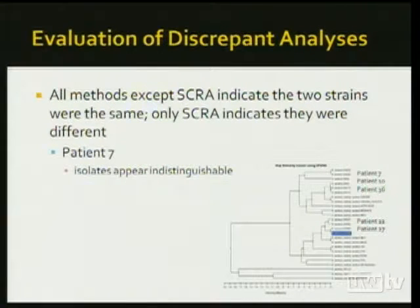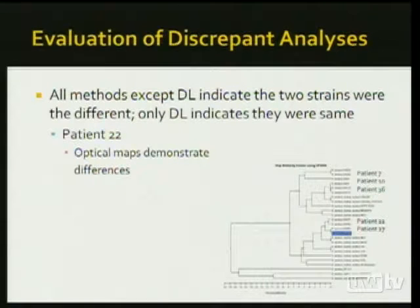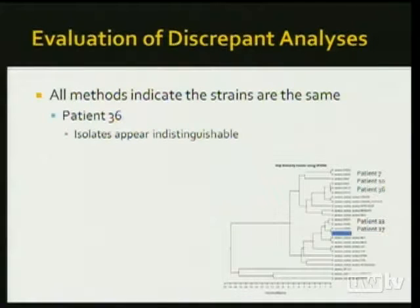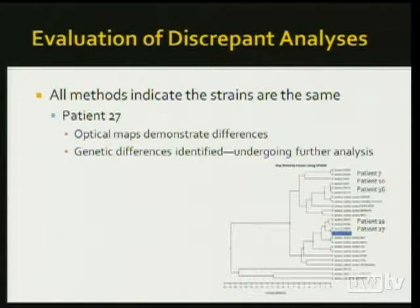Where only SpectraCell indicated the two strains were different, the isolates appeared indistinguishable by optical mapping — SpectraCell may have been overcalling. Where Diversalab said the strains were the same but all other methods said they were different, the Diversalab did not have enough discriminatory power. Where REP-PCR, Diversalab, and the antibiogram said isolates were indistinguishable but pulse field and SpectraCell indicated differences — that was consistent with the optical map as well. We also tested two pairs where all methods agreed the strains were the same: one pair showed no differences by optical map, but the second showed small genetic differences that we're going to look into further.